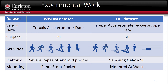Before discussing the experimental work, here is a brief summary of the datasets used. The first dataset is the Wisdom dataset, collected with several types of Android phones using 29 subjects. Data was collected from a tri-axis accelerometer only. Users performed six activities: four complex activities — walking, jogging, going upstairs, and going downstairs — and two static activities: standing and sitting down. The second dataset is the UCI dataset, which also includes gyroscope data, with 30 subjects. Instead of sitting down, there is a laying down activity, and this dataset was collected using only one platform mounted at the waist of the user.